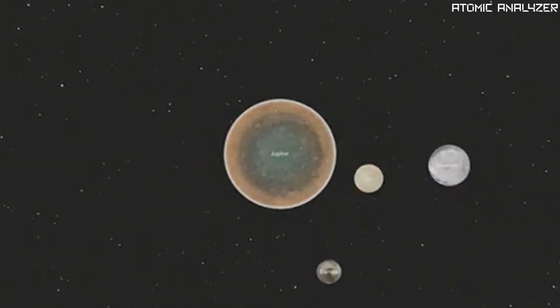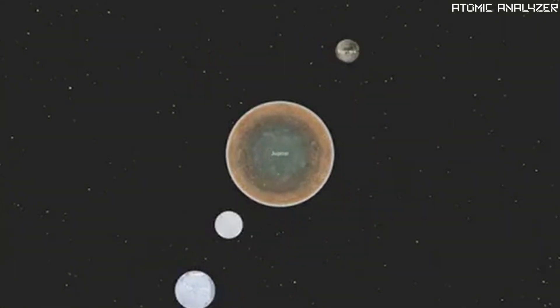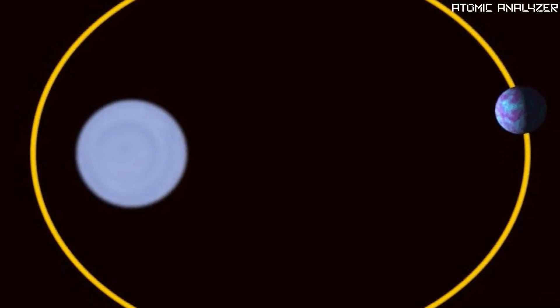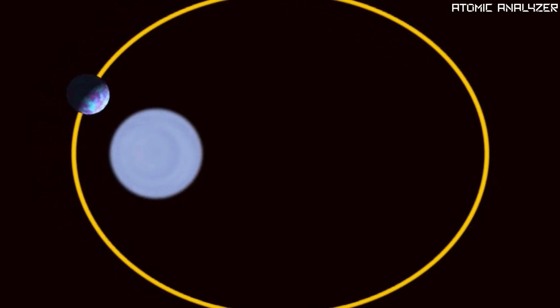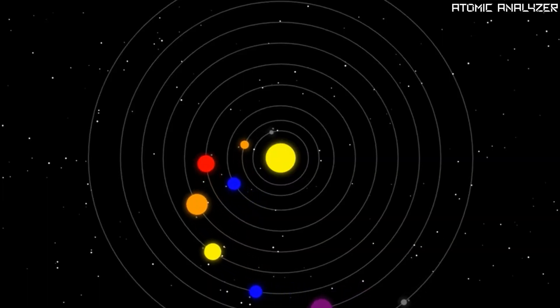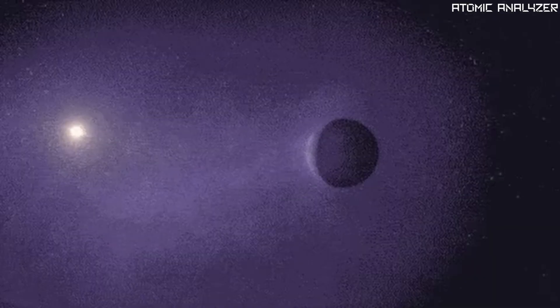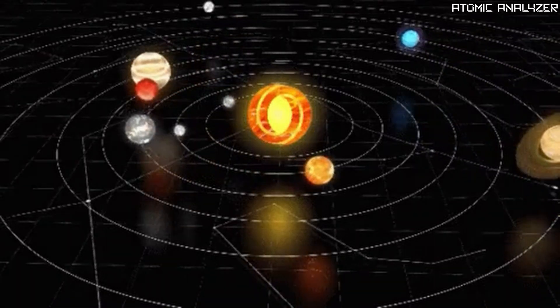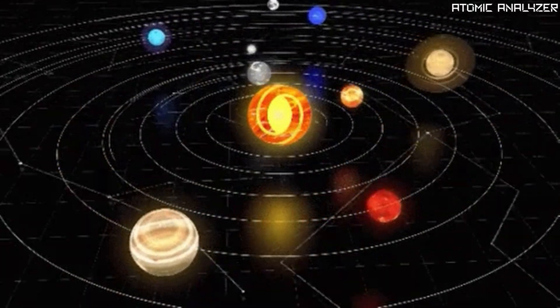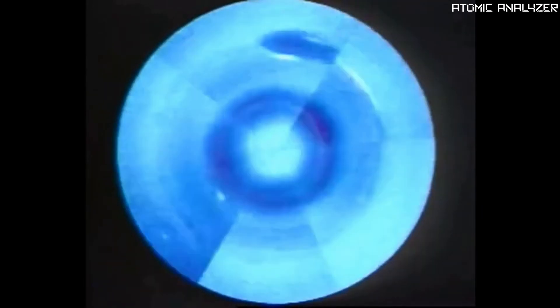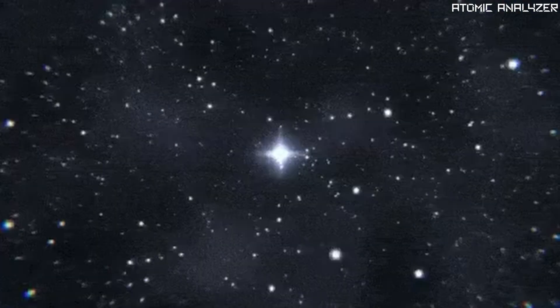As they moved slowly outward, Neptune and Uranus traded places. Eventually, interactions with the remaining debris caused the pair to settle into more circular paths as they reached their current distance from the Sun. Along the way, our solar system may have lost members — it's possible that one or even two other giant planets were kicked out of the neighborhood by all this movement. In the early days, the solar system was very different, with many more planets, perhaps as massive as Neptune, forming and being scattered to different places.